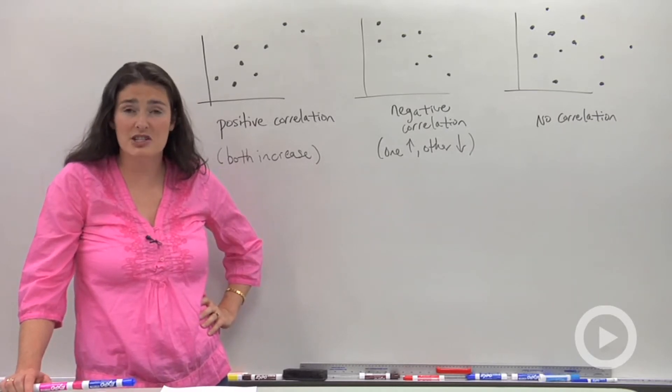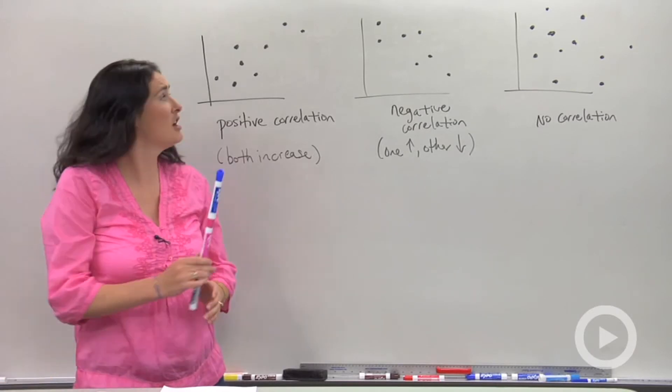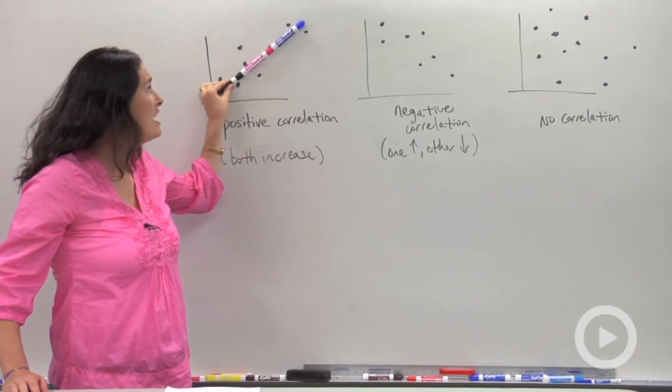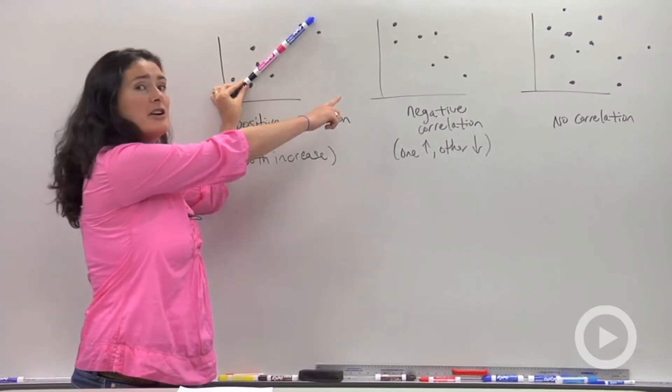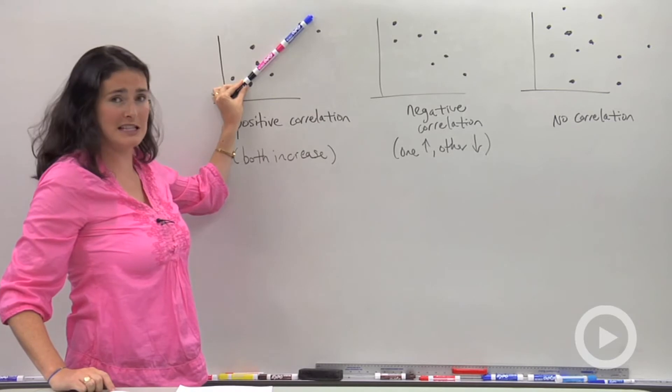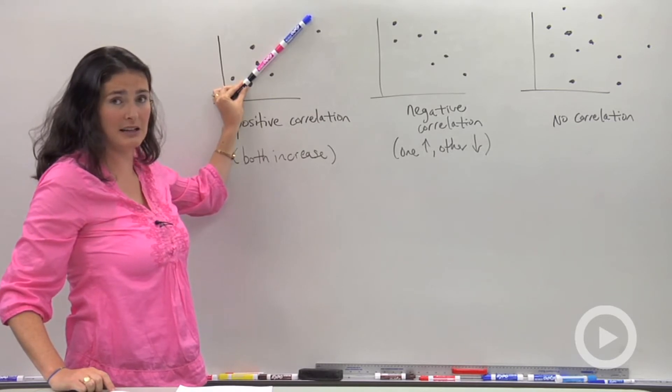Correlation describes the relationship between two variables. So in this first graph, we have what's called a positive correlation because as one variable gets bigger, the other variable also gets bigger. If you know about slopes, you might see that's a positive slope line. Easy.